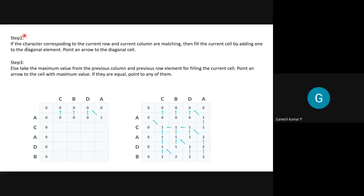Case two: if the elements are different — for example, A and C — we look at the element from the top and the element from the left, and take the maximum of those two values to fill the current cell. In this case both are zero, so zero is placed there. We draw an arrow pointing toward whichever cell had the maximum value.